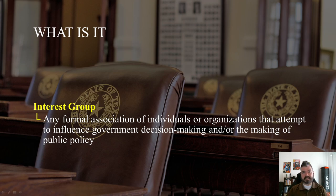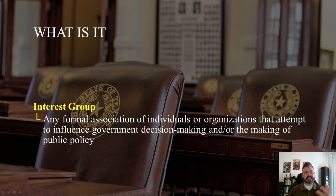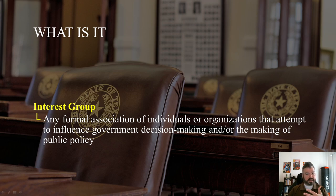So what is an interest group? An interest group is any formal association of individuals or organizations that attempt to influence government decision-making and the making of public policy — that is to say, legislation passed by the legislature or the implementation of laws by the executive. Some examples of interest groups include the Human Rights Campaign, the United to End Genocide Campaign for Working Families, and Americans for Democratic Action.